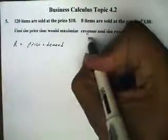As we find the revenue function, we want to maximize it, so we want to take a derivative of it and set it equal to zero.